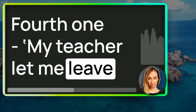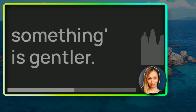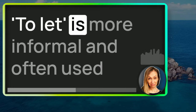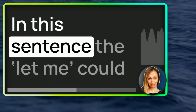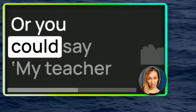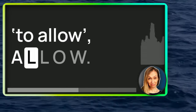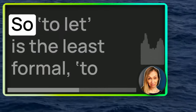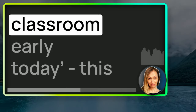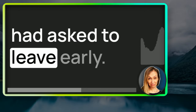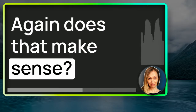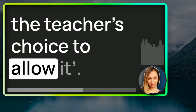Fourth one: my teacher let me leave the classroom early today. In contrast, to let someone do something is gentler — it's about permission, often a kind gesture showing flexibility and understanding. To let is more informal and often used in everyday conversation. In this sentence, 'let me' could be replaced by the more formal 'permitted me' or 'allowed me.' To let is the least formal, to allow is in the middle, and to permit is the most formal. The clear expectation for the person speaking was that they were expecting to stay longer — leaving early wasn't a given, even if it was the teacher's choice to allow it.